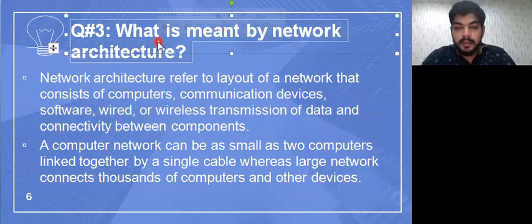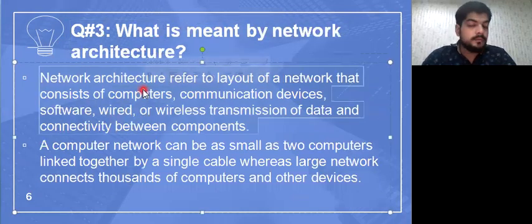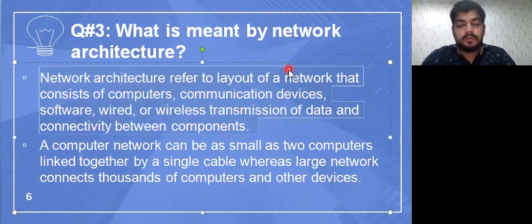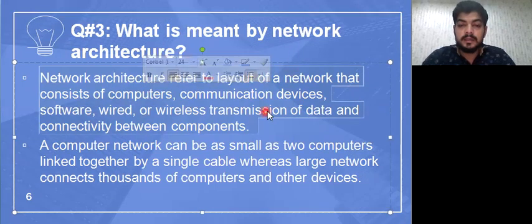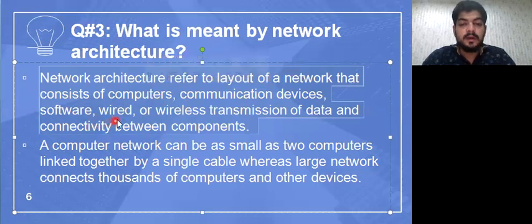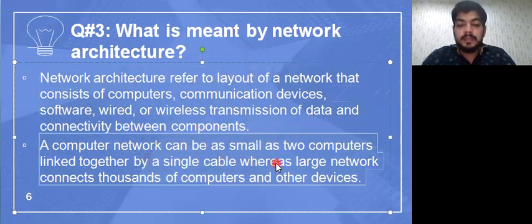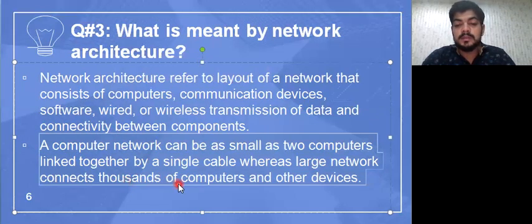The third question is: what is meant by network architecture? Network architecture refers to the layout of a network. It consists of computers, communication devices, software, wired or wireless transmission of data, and connectivity between components. A computer network can be as small as two computers linked together by a single cable, whereas a large network connects thousands of computers and other devices.